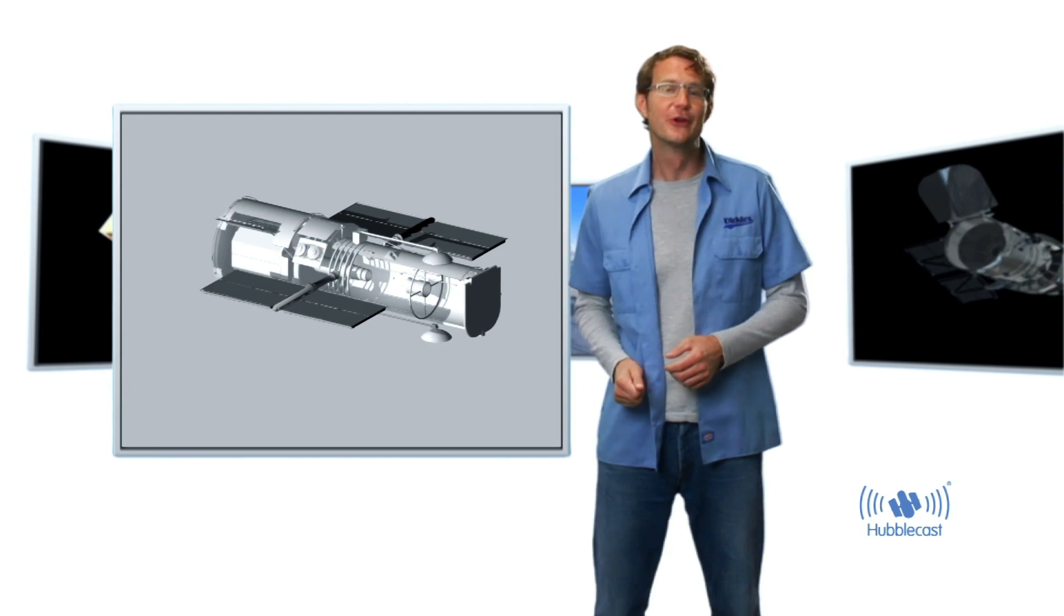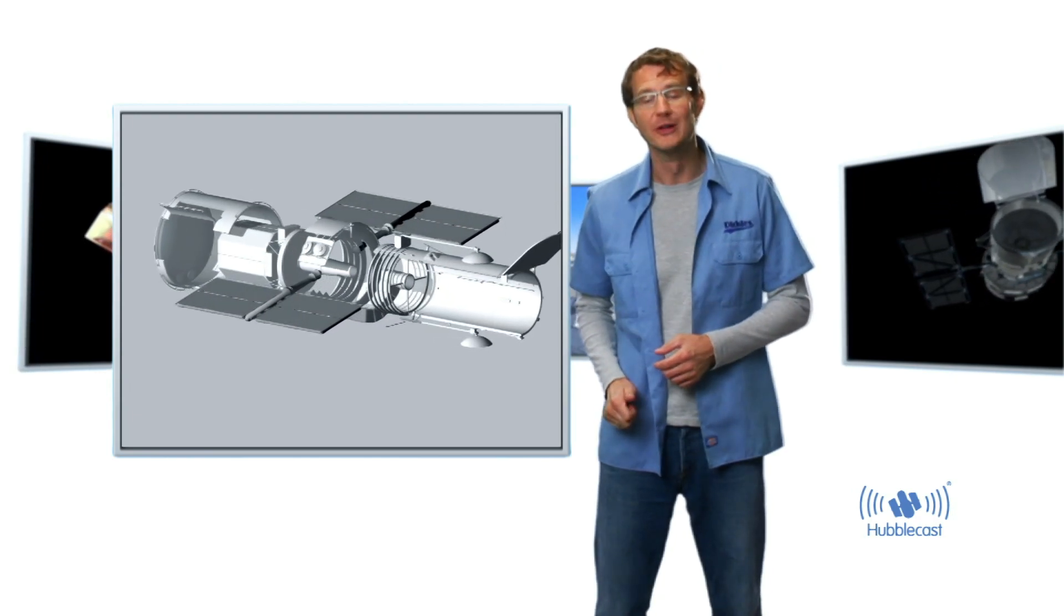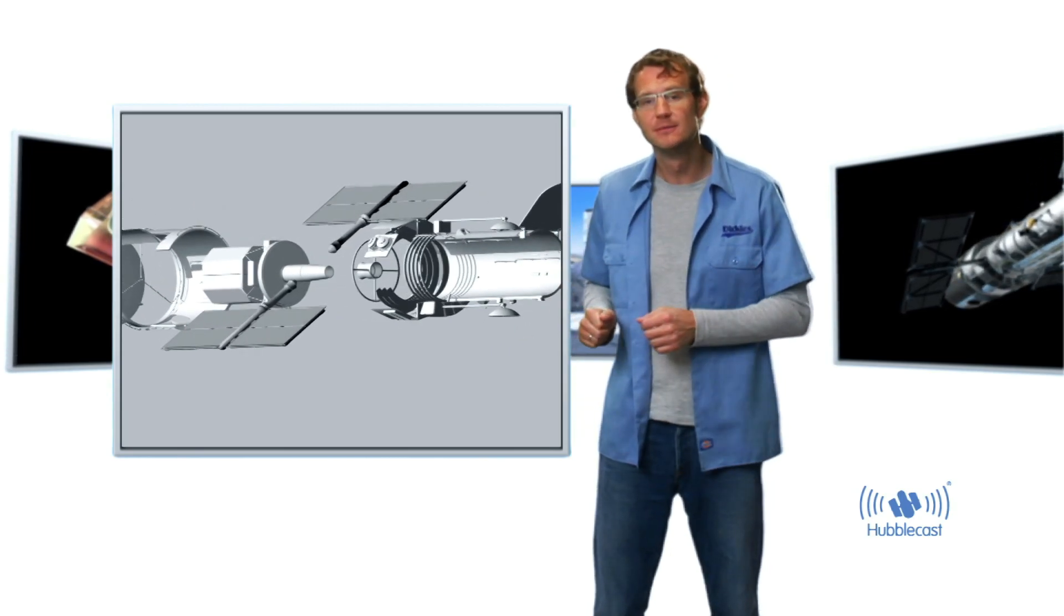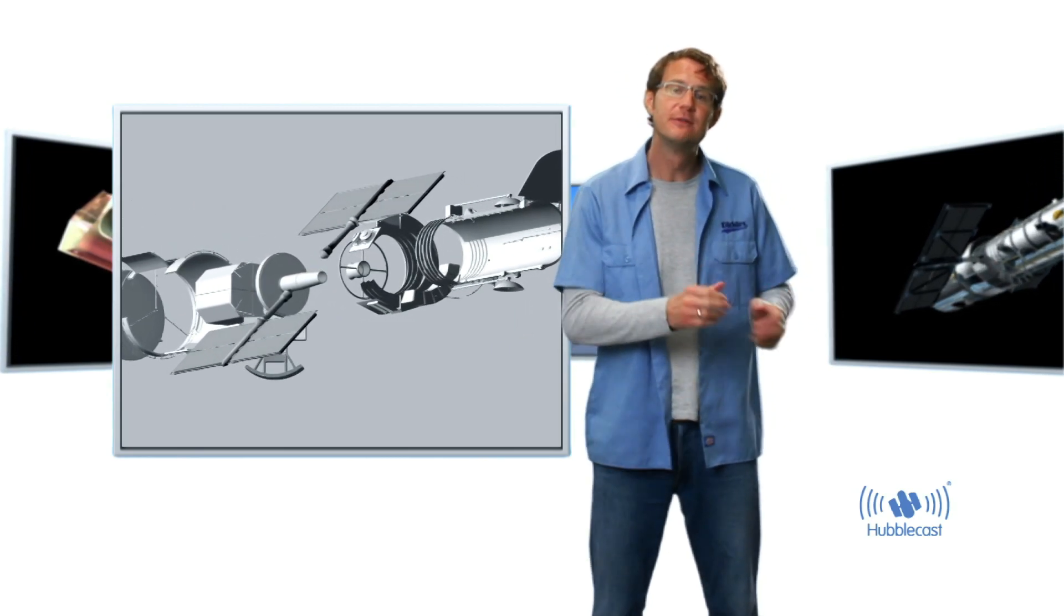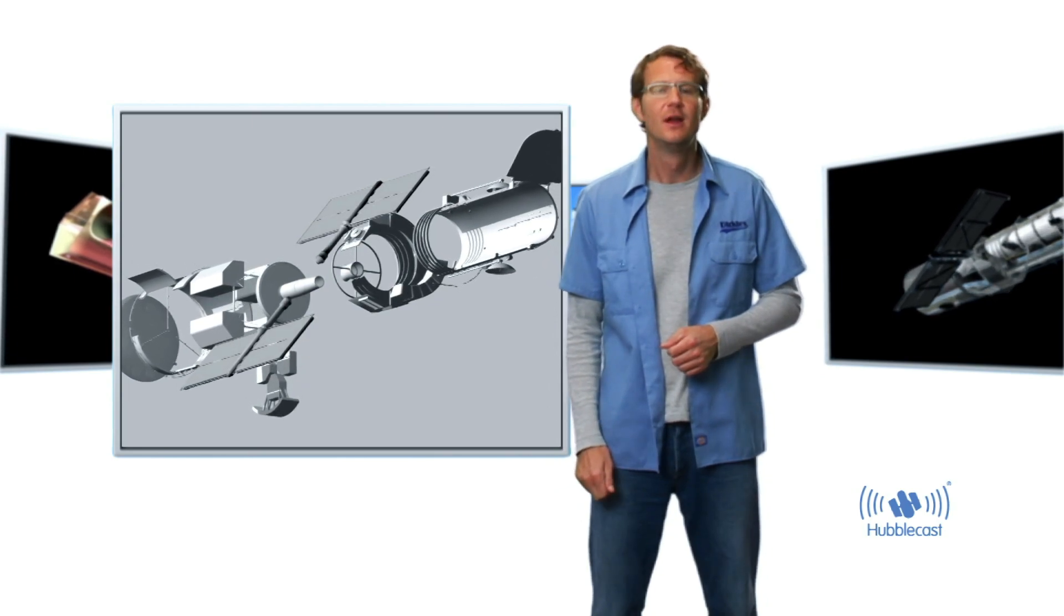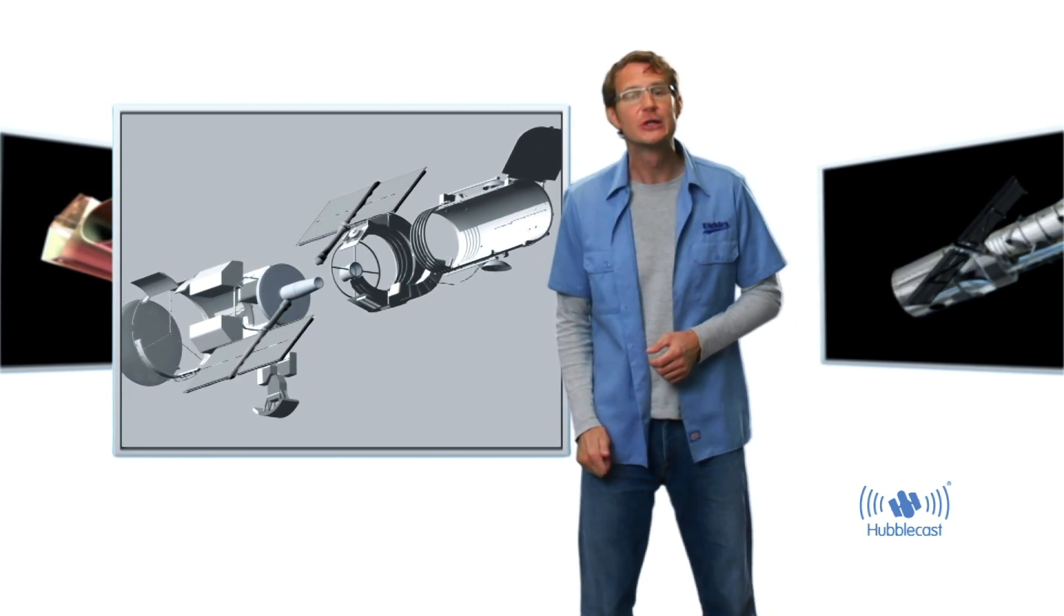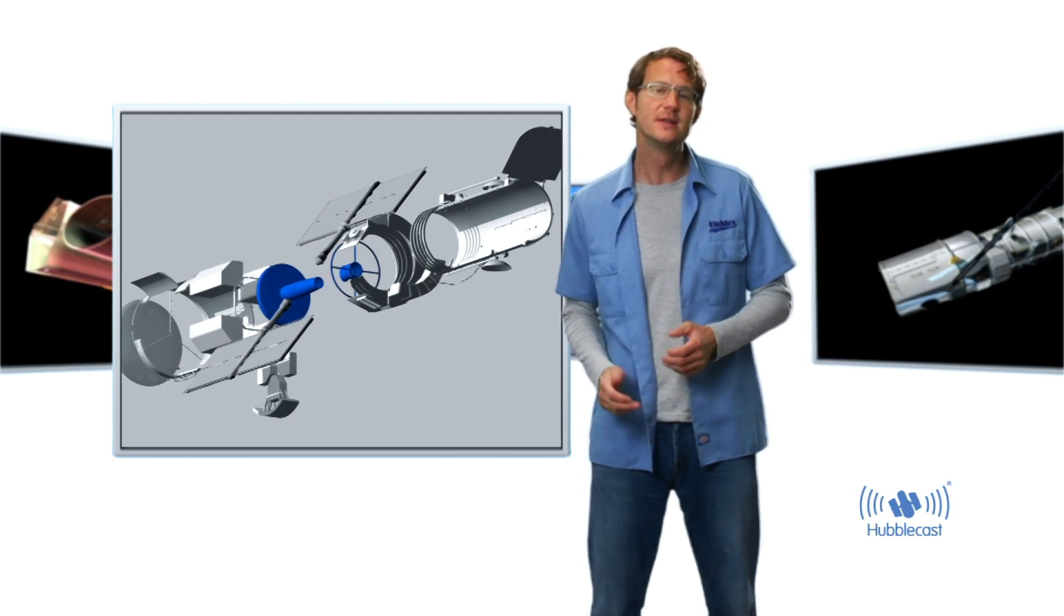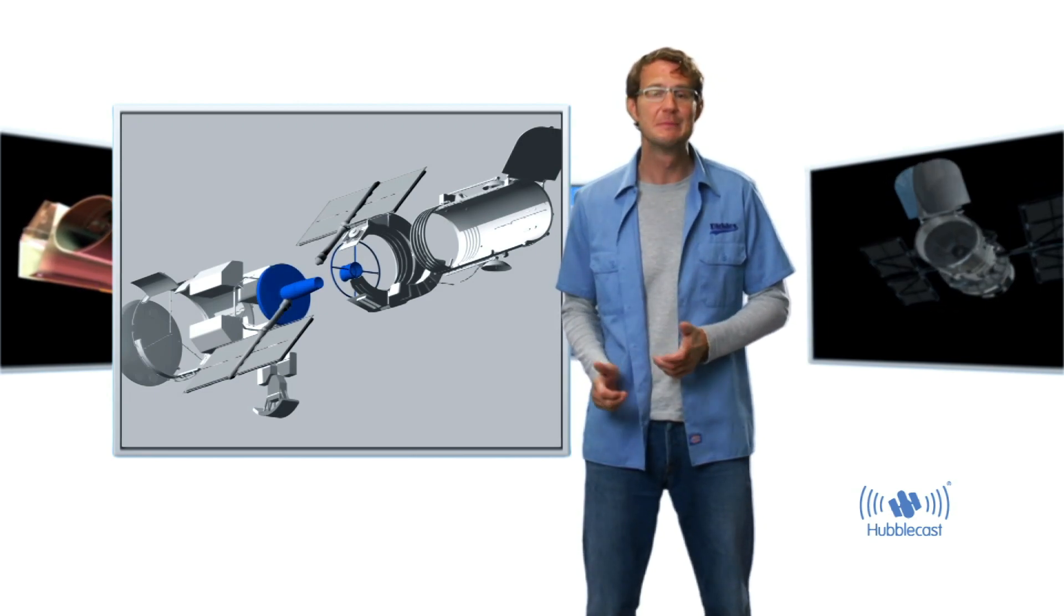So how does a telescope work? Well, common to almost all telescopes, regardless of size or purpose, is that they have a mirror, some instruments and a few supporting systems. Now the main function of the mirror is to collect as much light as possible from distant stars and galaxies. It is not to magnify anything, as many people think.